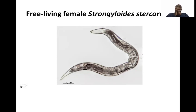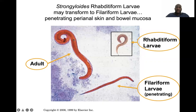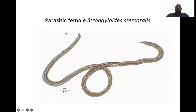Strongyloides stercoralis has a feature of existing as both free-living and parasitic. It is one of the very few nematodes that have that feature of being both free-living and parasitic. It looks different when it is free-living versus parasitic. This is the female version of Strongyloides stercoralis, and you can see here there are some eggs that it will be laying.